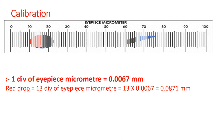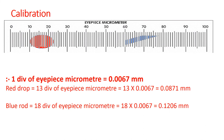For calcium oxalate crystals, if the crystal spans from division 60 to approximately 78, that is 18 divisions. So 18 × 0.0067 = 0.1206 mm — that is the length of the crystal. You can also rotate the eyepiece micrometer to measure the width or diameter of objects in different orientations.